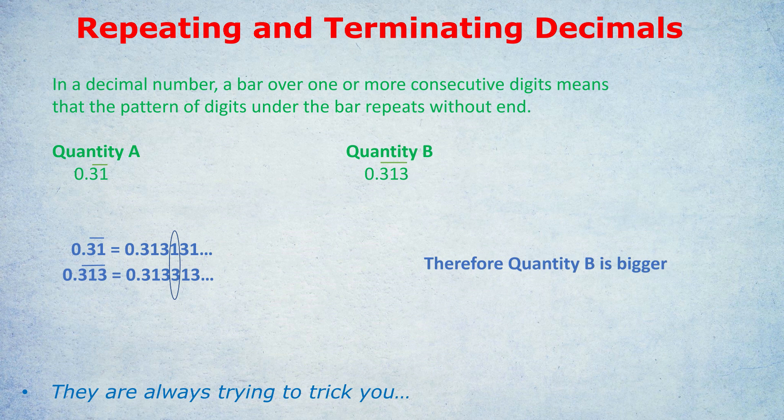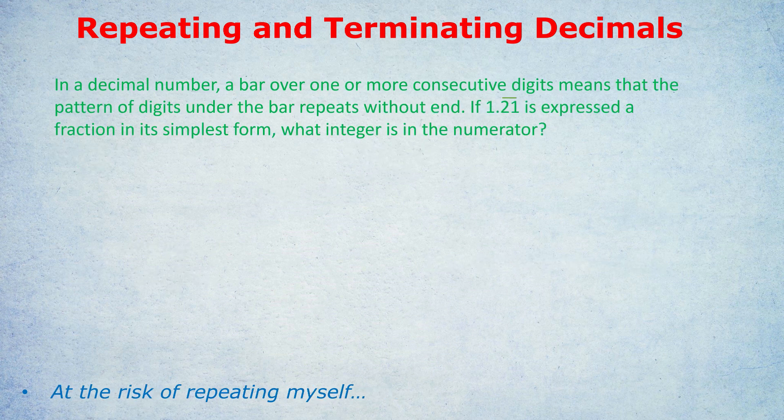But don't you worry, we're just getting started. What about another way they can test you on repeating and terminating decimals? And here I'm convinced that at least the majority of students won't know how to do this. Here is an example of what would be a difficult question on this topic. Again, in a decimal number, a bar over one or more consecutive digits means that the pattern of digits under the bar repeats without end. So here they're talking about 1.21 with the bar over 2 and 1. So the number would be 1.21212121 forever. If that number is expressed as a fraction in its simplest form, what integer is in the numerator?